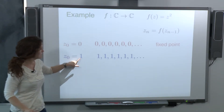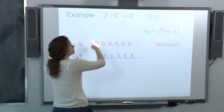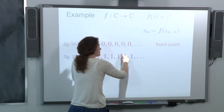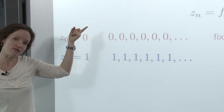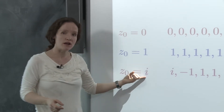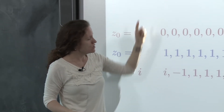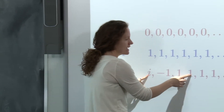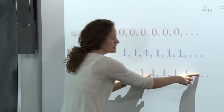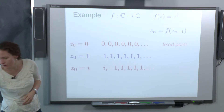Starting at the point 1: we plug 1 into z squared, get 1 back — another boring sequence of ones. One is also a fixed point. But starting with the complex number i: i squared is minus 1, then minus 1 squared is 1, so after two steps the sequence is constant. Starting with 2: we get 2 squared is 4, then 16, then 256 — the sequence gets bigger and bigger and shoots off to infinity.